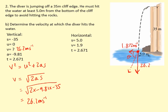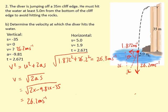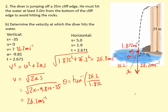Now knowing both horizontal (1.872 m/s) and vertical (26.2 m/s) components, we find the resultant speed using Pythagoras: √(1.872² + 26.2²) = 26.3 meters per second. The diver is moving almost entirely downward with only a small horizontal component. For the angle, using tan⁻¹(opposite/adjacent) = tan⁻¹(26.2 / 1.872), the angle is 86 degrees below the horizontal.